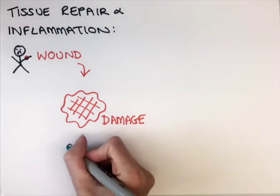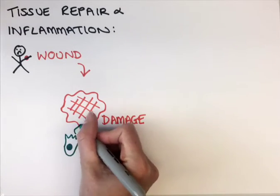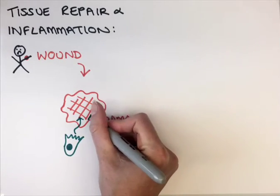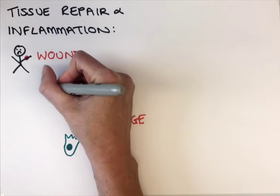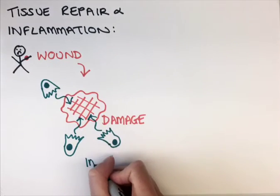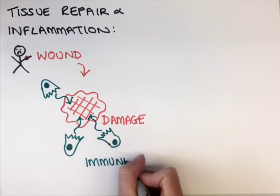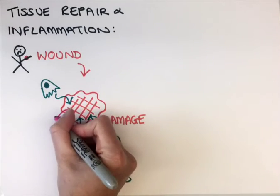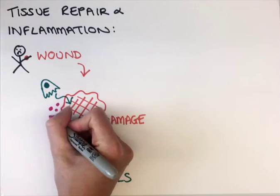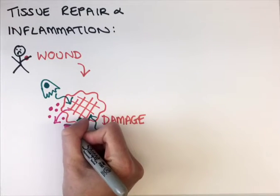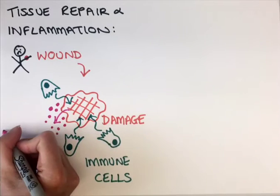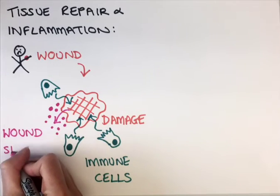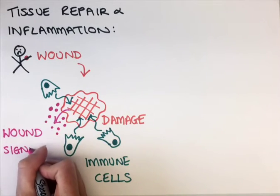Cells of our innate immune systems are quickly drawn from elsewhere in the body right into the wound area, where they perform important tasks such as clearing up debris and fighting infection. At the moment, we don't understand exactly what the signals are that are released by the damaged tissue that are responsible for attracting the immune cells to this area.